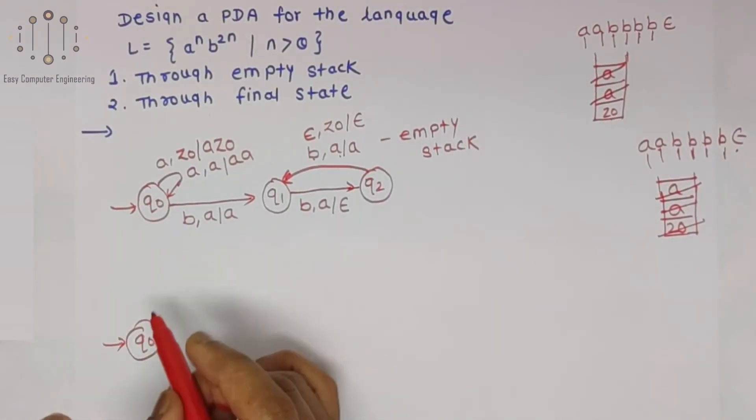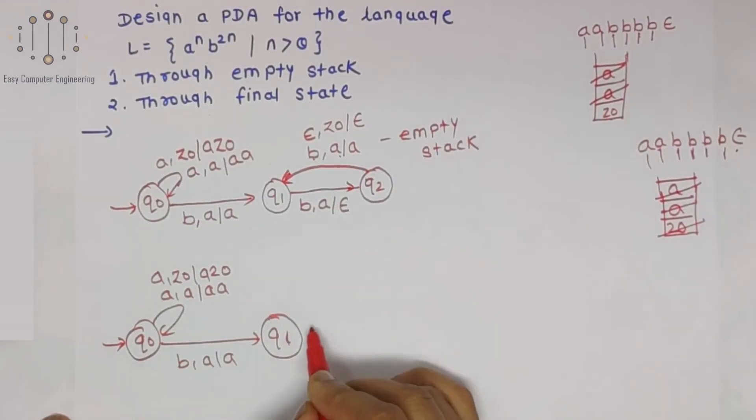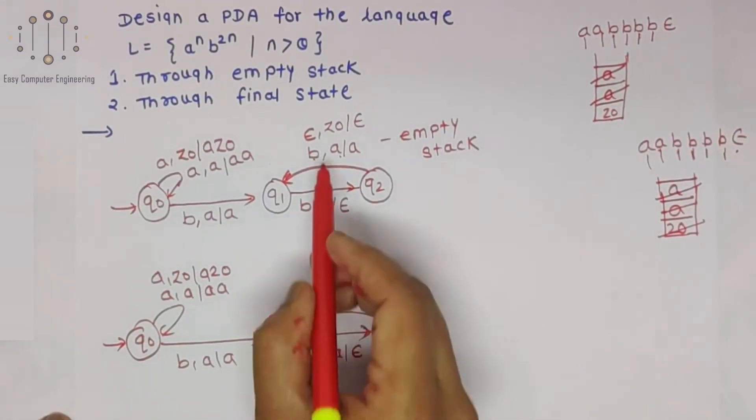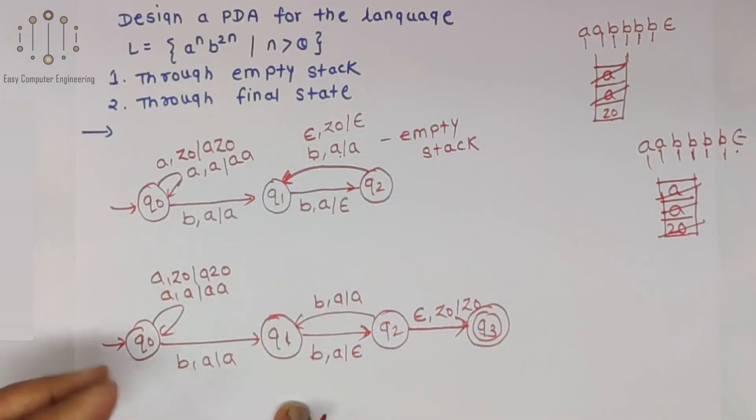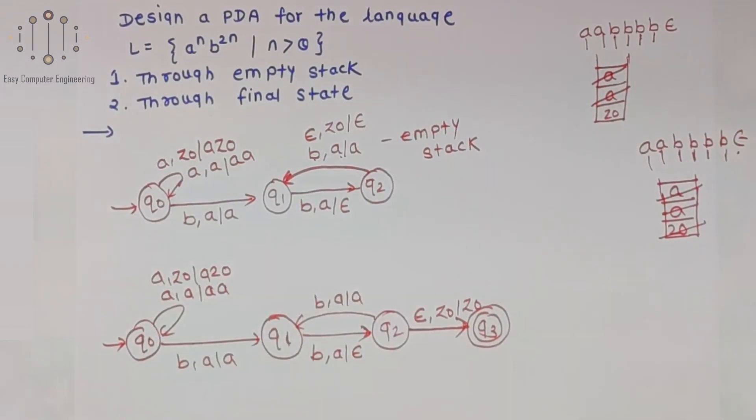Just this change: we will show like this. On incoming epsilon, keep that Z0 as it is and show the final state, that will be Q3. This will be the final PDA. Now you can show all seven tuples for the PDA. Thank you.